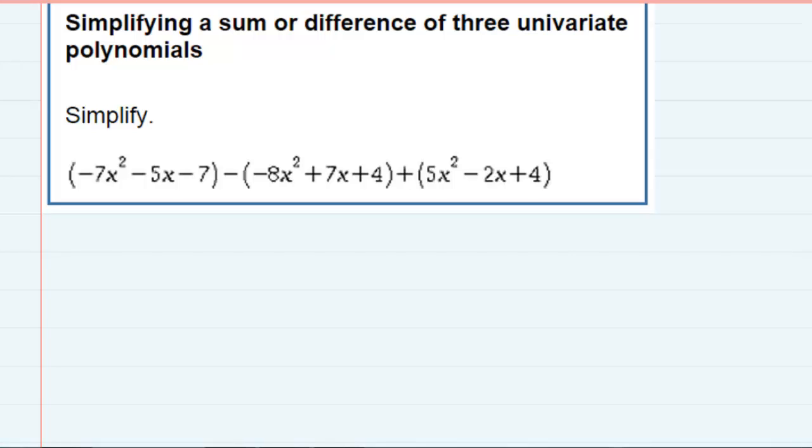Simplifying a sum or difference of three univariate polynomials. We're asked to simplify, and so that means we're going to be combining some like terms from each one of those polynomials.